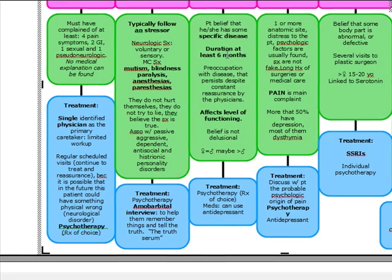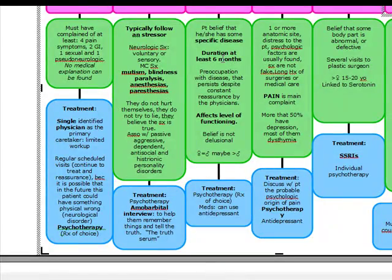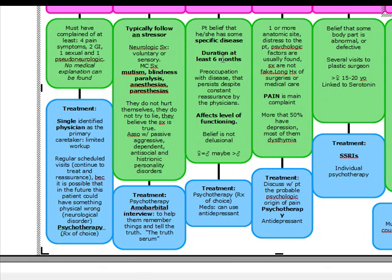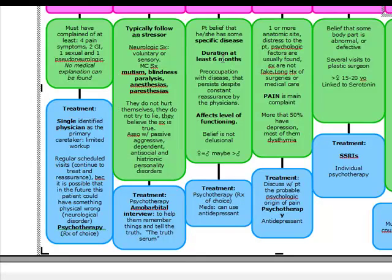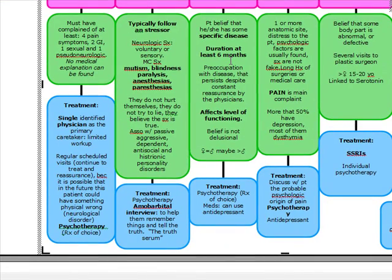Hypochondriasis is not what we experienced studying pathology — these patients actually believe they have a specific disease. Psychiatry becomes easier with algorithms and diagnostic criteria. If someone on the test looks like they have hypochondriasis but the duration is less than six months, it is not hypochondriasis.